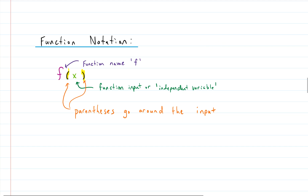Remember, our function is like a gumball machine — we're putting something in, like a quarter. So the parentheses identify what the input is. Everything inside the parentheses is the input, or the independent variable. The parentheses go around everything going into the function. And then the function has a name — this function is named F.